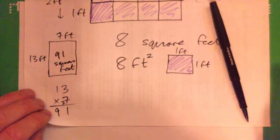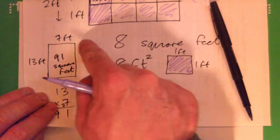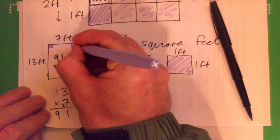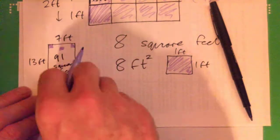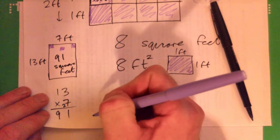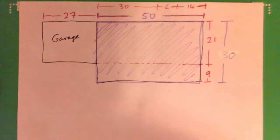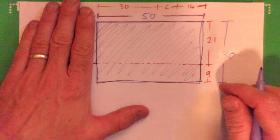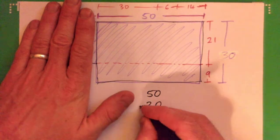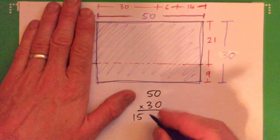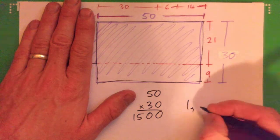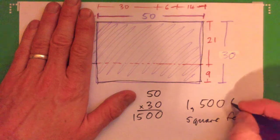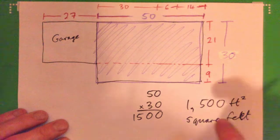13 times 7 is 91 — 91 square feet. Obviously this is just a picture of it, a little drawing, but there are 91 little square feet in there. If you were putting tiles in this room, you'd need 91 of them. So back to our problem: the purple rectangle is 50 times 30 — the area is 1,500 square feet.